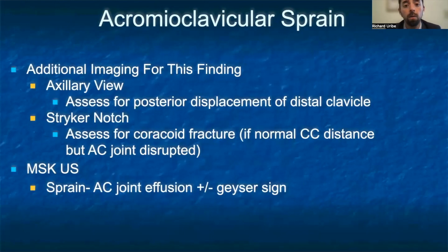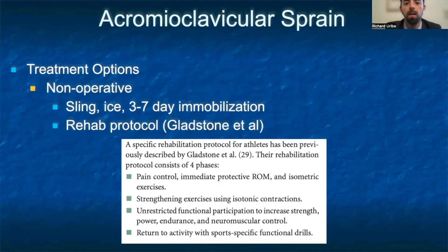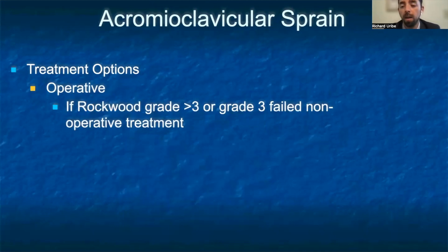Grade 6 sprain has an inferior displacement of the clavicle into the subacromial or subcoracoid space. Additional imaging includes an axillary view of the shoulder to better assess for posterior displacement of the distal clavicle, and a stryker notch view if concerned for coracoid fracture, specifically if the CC distance is normal but the AC joint is disrupted. Ultrasound is useful in evaluation of AC joint injuries, where you can often see a joint effusion and/or a geyser sign. Non-displaced or minimally displaced injuries can be treated with a sling for three to seven days. Operative management is preferred for Rockwood grade 4 and above, or grade 3 that has failed non-operative treatment.